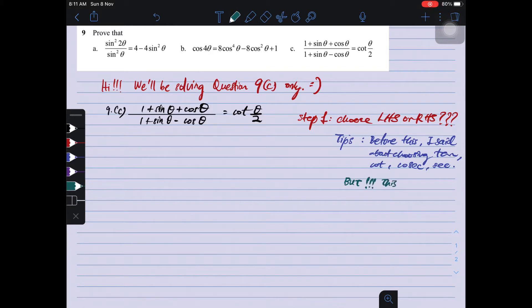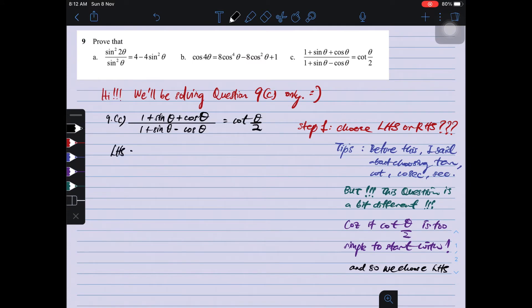But this question is a bit special, a bit different. Because the cotangent of theta over 2 is too easy, you know, too simple to start with. Therefore, we have to choose the left hand side because right hand side is too easy, don't know how to continue. So we do left hand side.